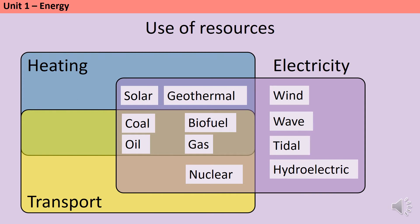For instance, in countries near the equator where there's a lot of sunshine, solar systems can be used to directly heat water for use in homes. Biofuels can be used to power cars instead of petrol or diesel, and it's even possible to power a rocket with nuclear fission reactions. The suitability of a resource comes down to its reliability and the equipment required — you couldn't use a wind turbine to power a car, and you wouldn't be able to go anywhere on a calm day.